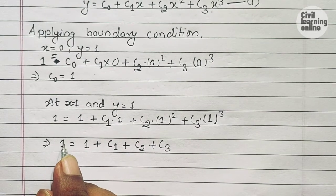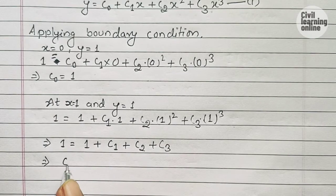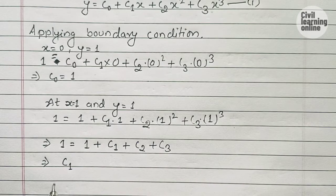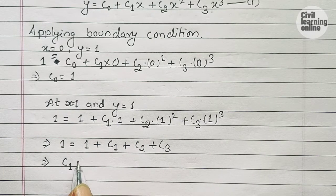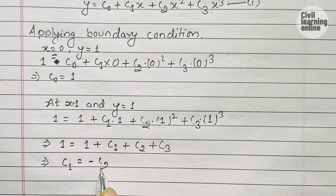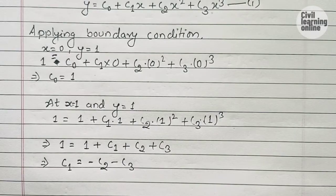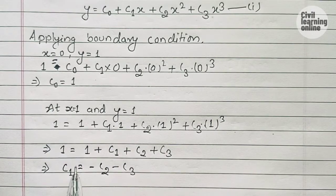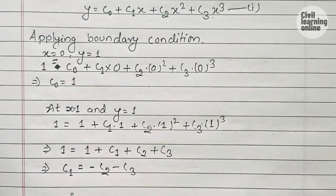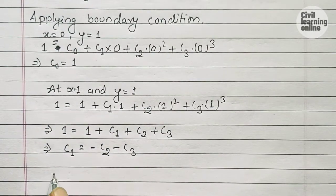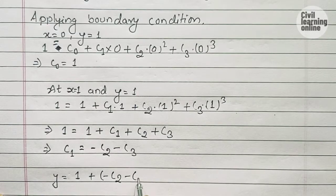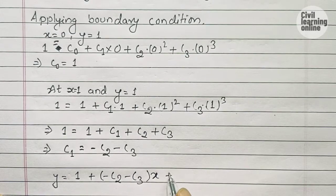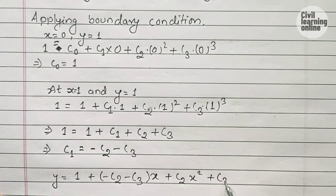From here we express c₁ as: c₁ = -c₂ - c₃. Now substituting the values of c₀ = 1 and c₁ = -c₂ - c₃ into equation 1, we get: y = 1 + (-c₂ - c₃)x + c₂x² + c₃x³.